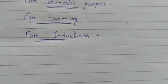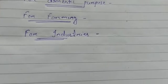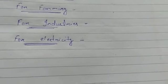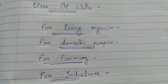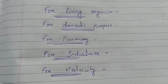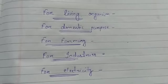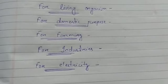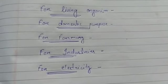In industries, water is used for various purposes: as a raw material, as a solvent, as a cooling agent, and as a cleaning agent. Water is also needed for electricity generation — hydroelectricity is a major source of electricity in most parts of the world, and water is required to generate it. These are the various uses of water.